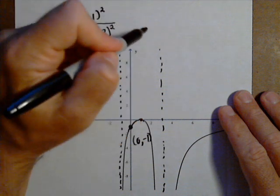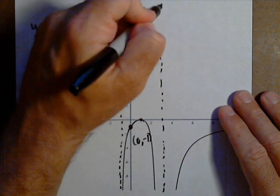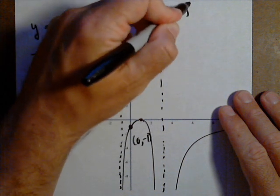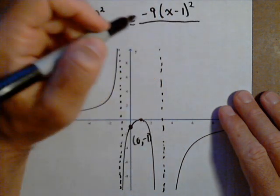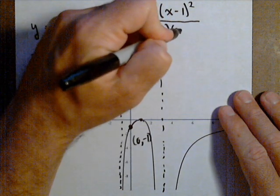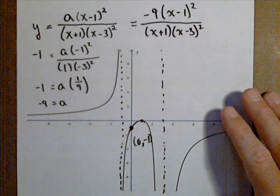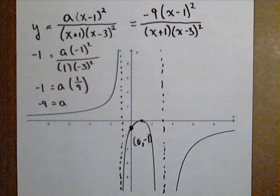We can now put together our rational function and check it in our graphing calculator. I'm going to put a negative nine in for a, times x minus one, the quantity squared in the numerator, over x plus one times x minus three squared. And that's how we can find the formula for a rational function given a graph.